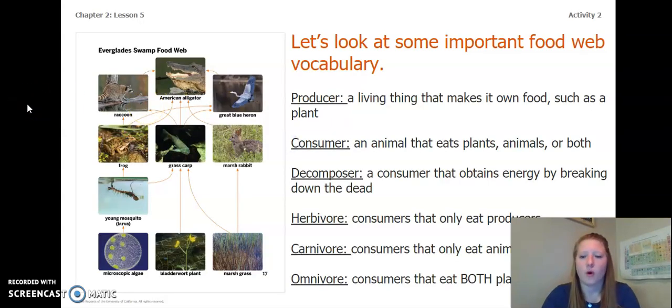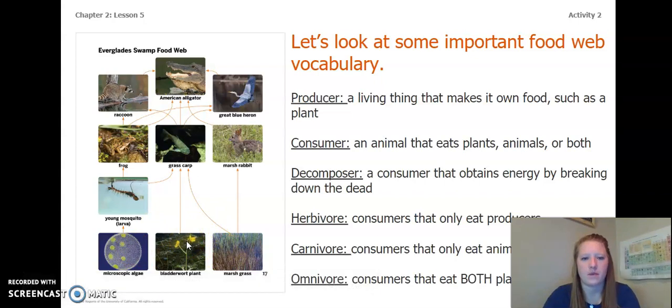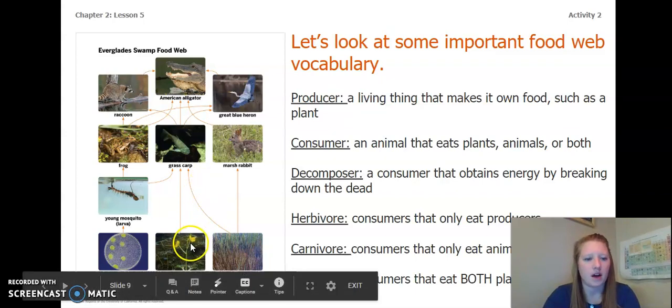Let's look at some important food web vocabulary. A producer is a living thing that makes its own food, such as a plant. So that would be our microscopic algae, our grass, or our bladderwort plant. A consumer is an animal that eats plants, animals, or both. So anything above our plants, these are all consumers.